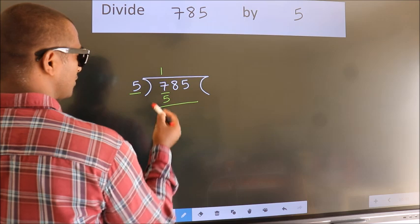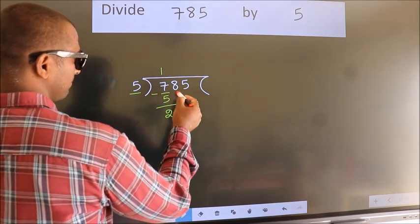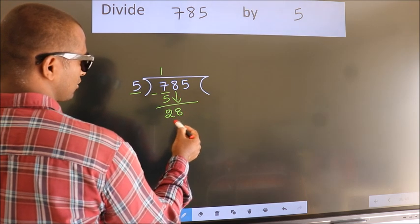Now, we should subtract. We get 2. After this, bring down the beside number. So, 8 down. So, 28.